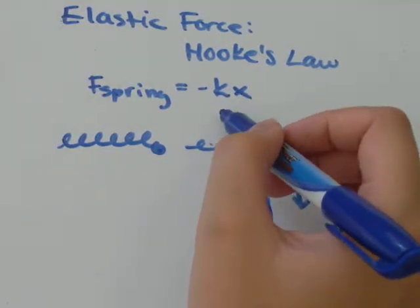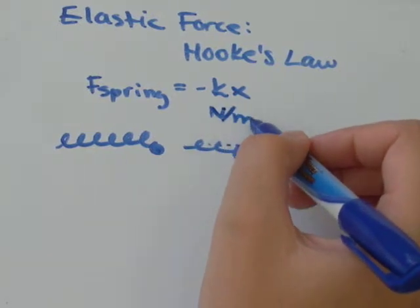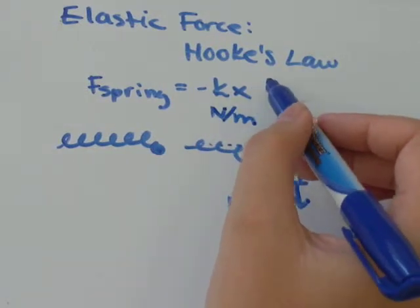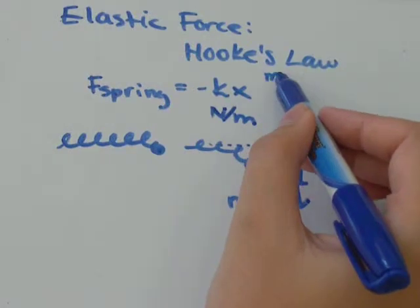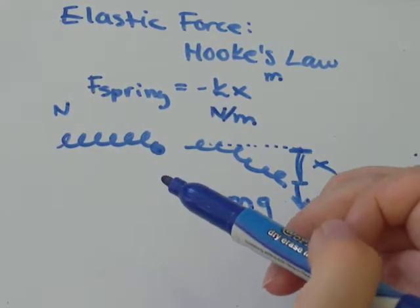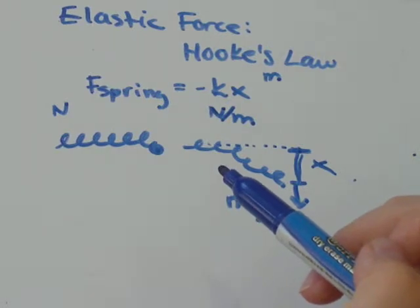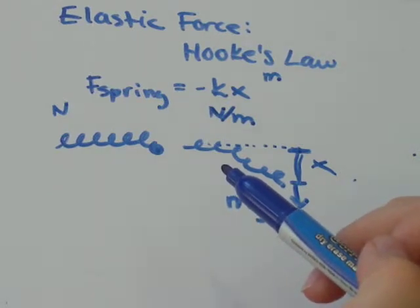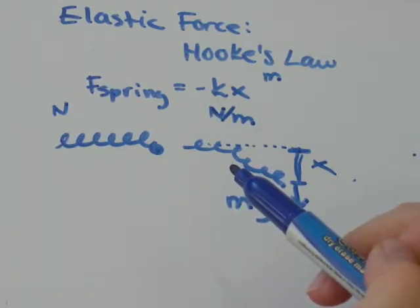K, the spring constant, is always measured in newtons per meter, x is measured in meters, and force is always measured in newtons.